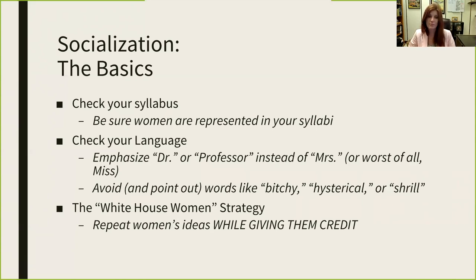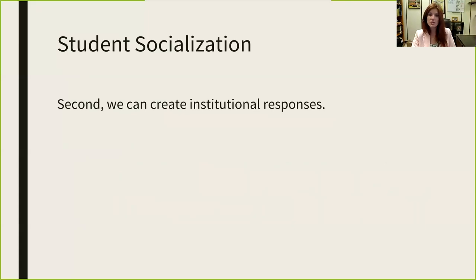It's also really important to make sure women feel heard. The White House women had a strategy where when a woman had a really good idea, someone else in the room would repeat that idea and say, 'I really liked Dr. Mitchell's idea, I really liked what she said,' just to make sure women's ideas are equally presented. There are institutional responses as well. When it comes to gender bias in student evaluations, institutions need to create a better space for women to work, and that kind of space will filter down into reducing gender bias in evaluations.